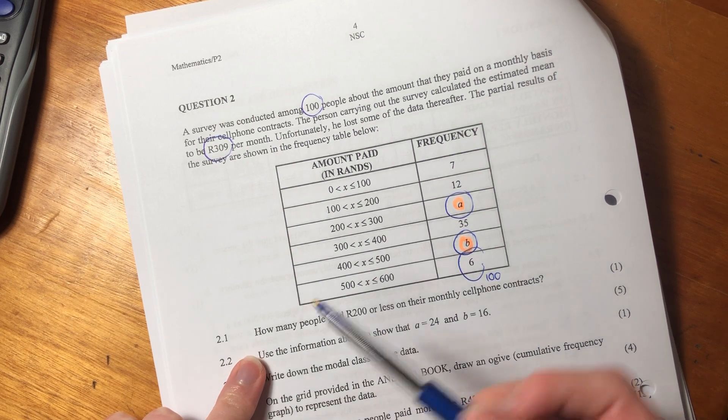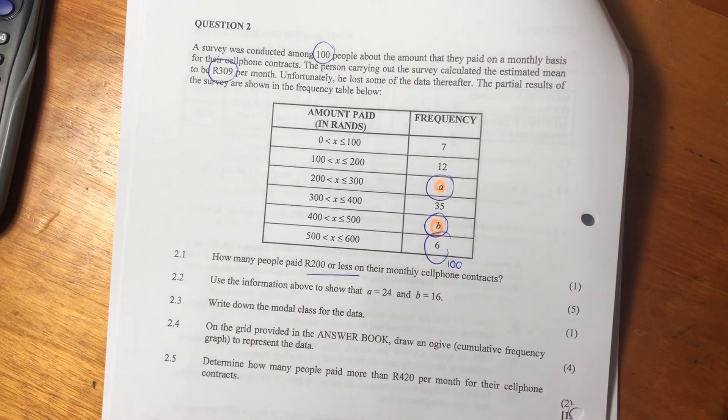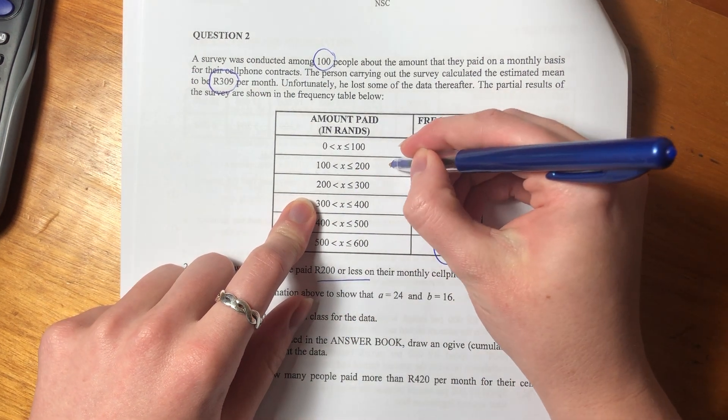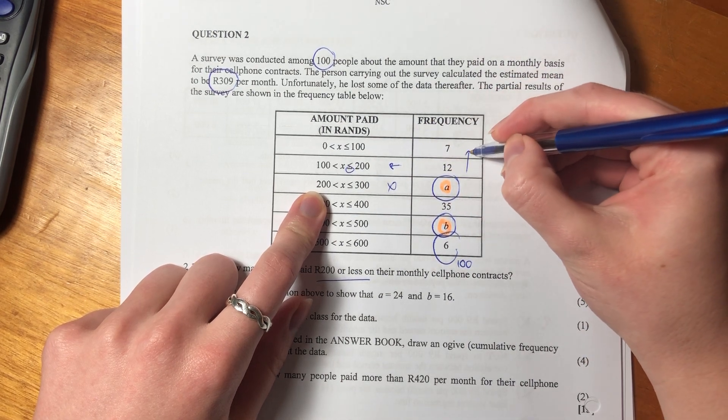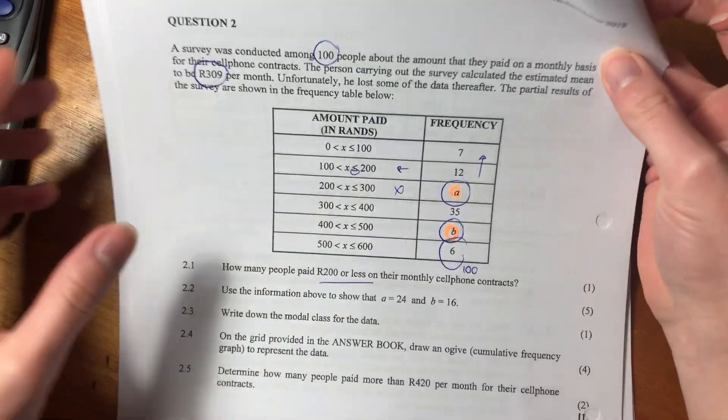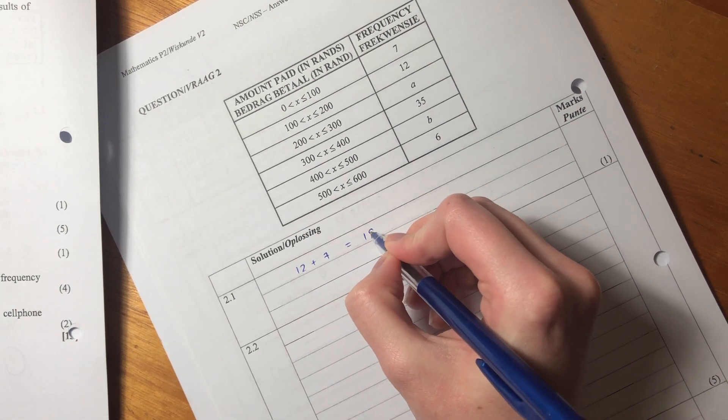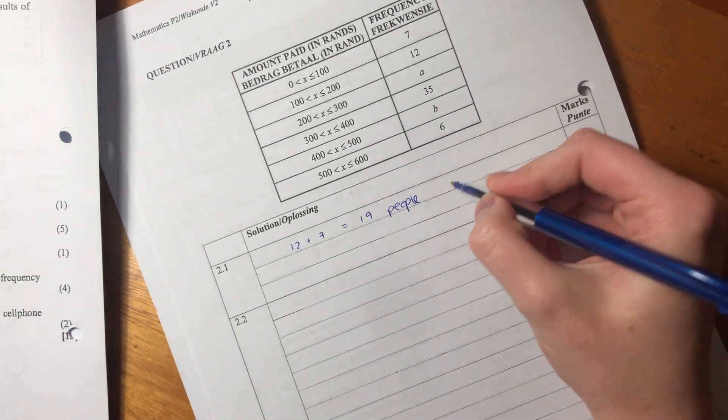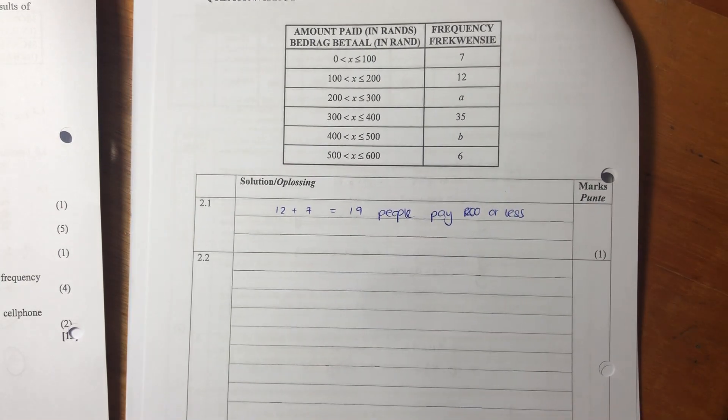Question 2.1 says: how many people paid 200 Rand or less on their monthly cell phone contract? What they're testing here is whether you can display your understanding of inequalities. We have 200 here and 200 there. This 200 here means that 200 is included in this category because of that little sign there. 200 is excluded from this category. So 200 Rand or less is the sum of these two - 7 and 12. Therefore, it is 19. So 19 people pay 200 Rand or less.